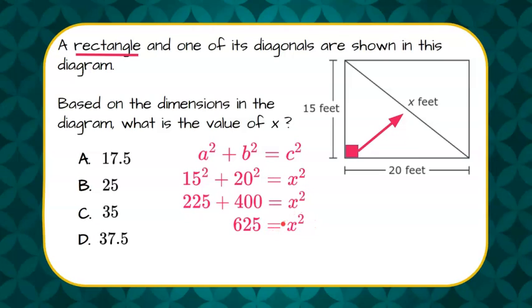Now to find the value of x the inverse of x squared is finding the square root. Whatever we do to one side we must do to the other. So we're going to find the square root of 625 and that will equal x and 25 times 25 is 625. So therefore our missing diagonal length is 25 feet.